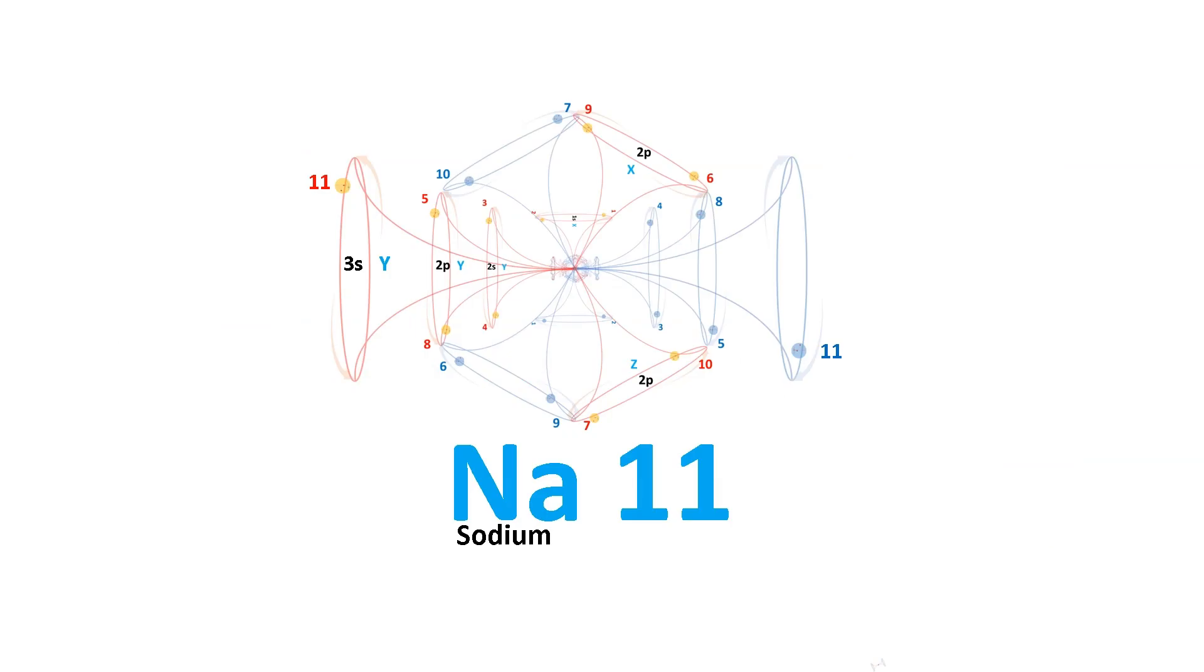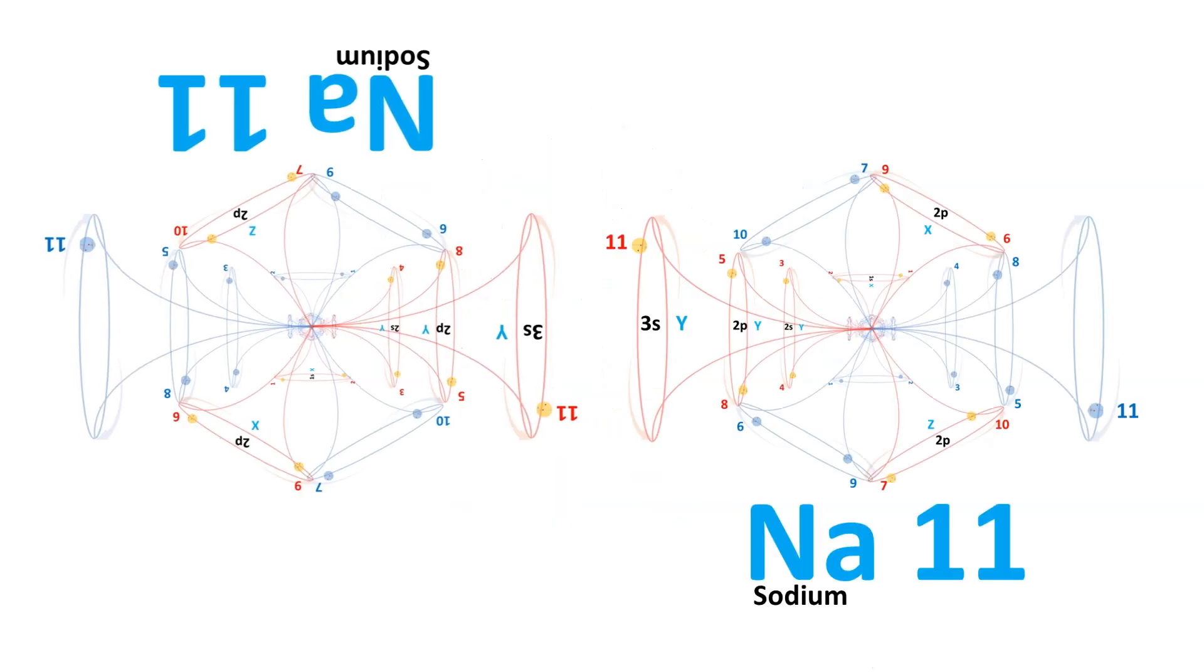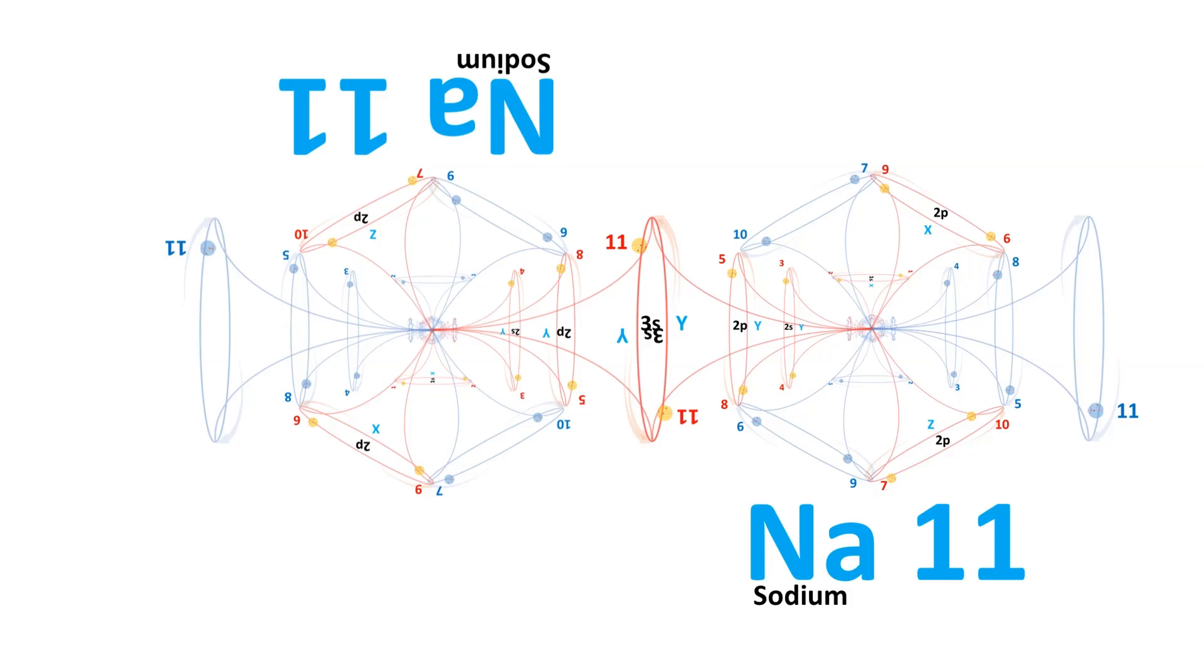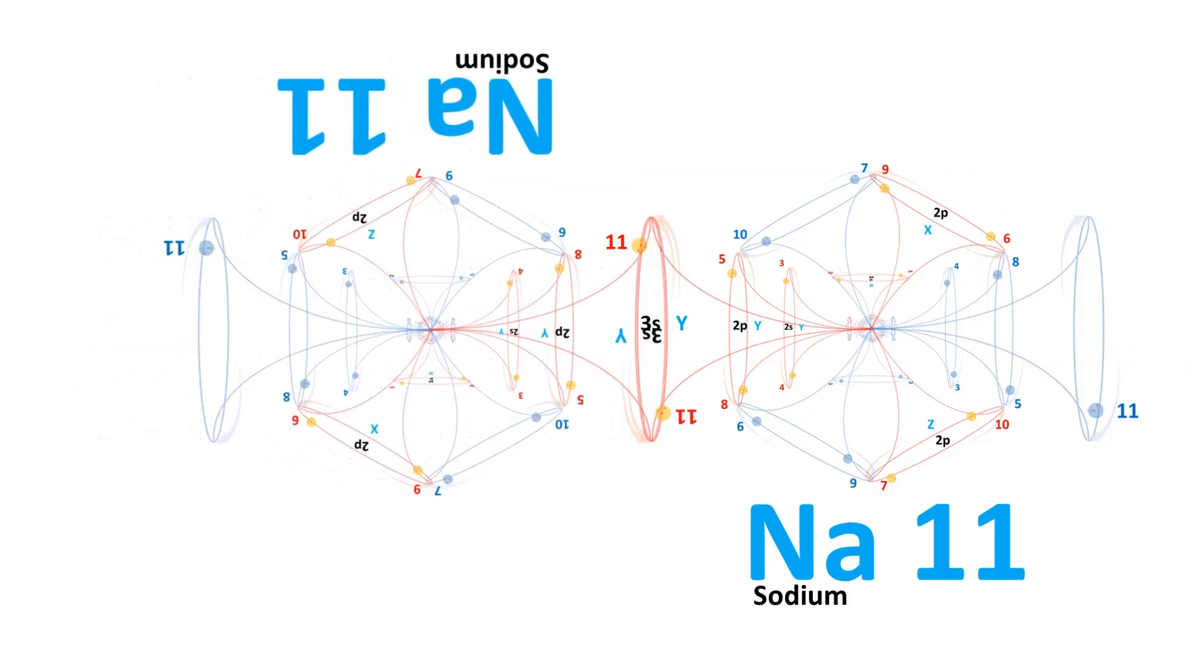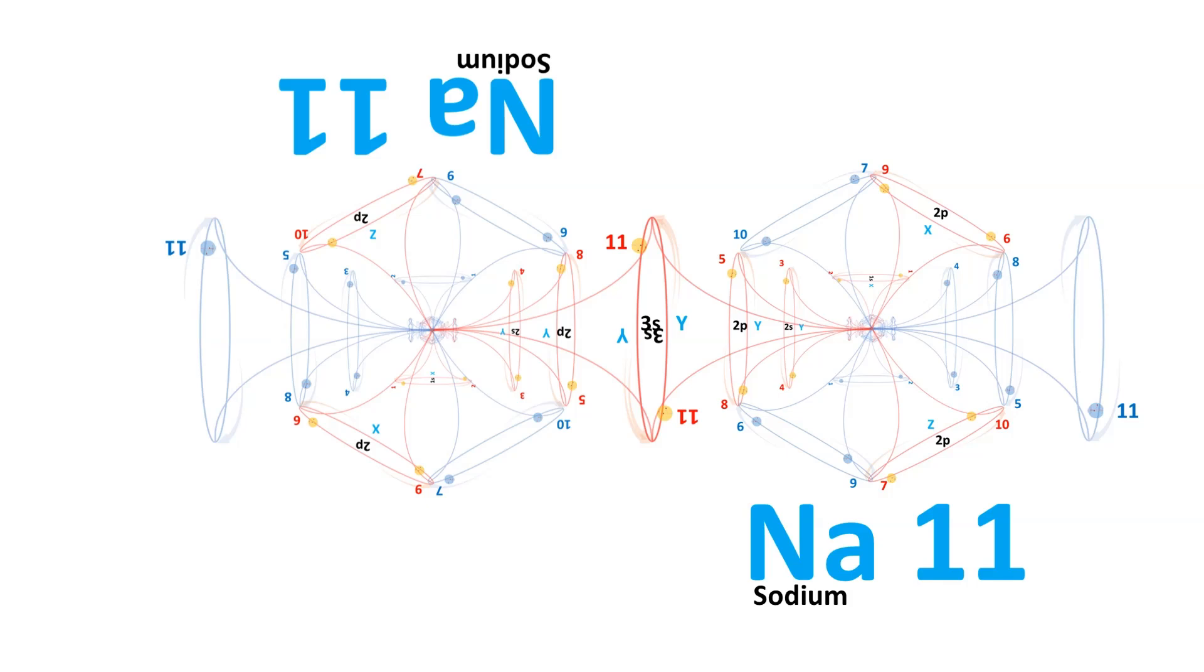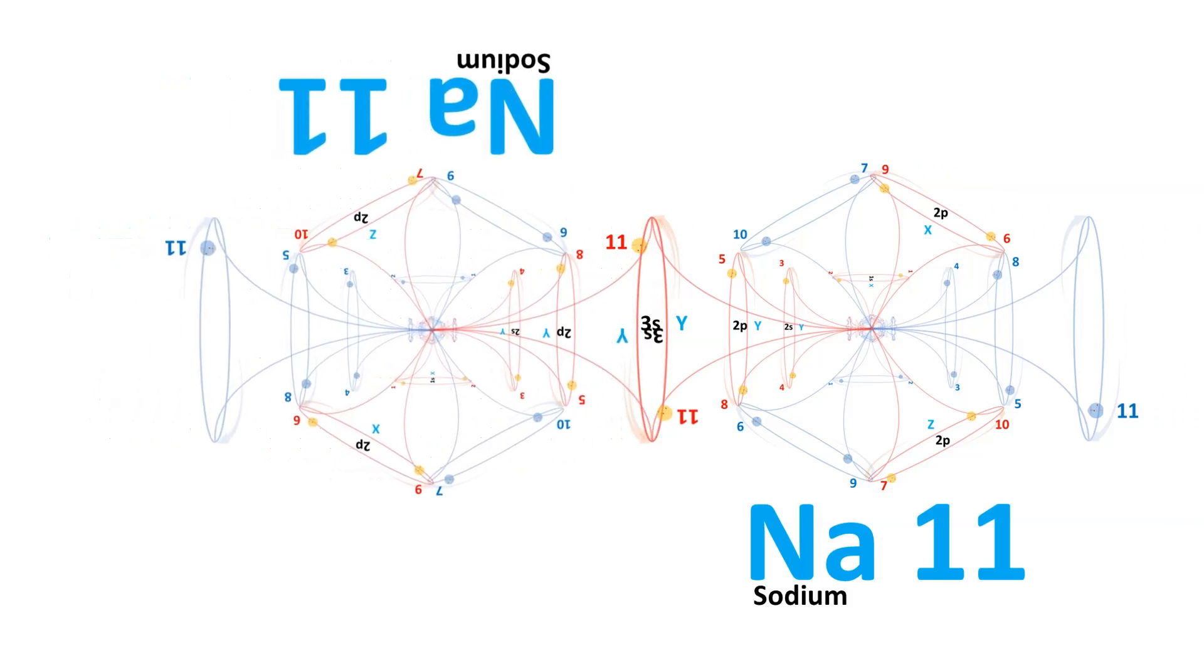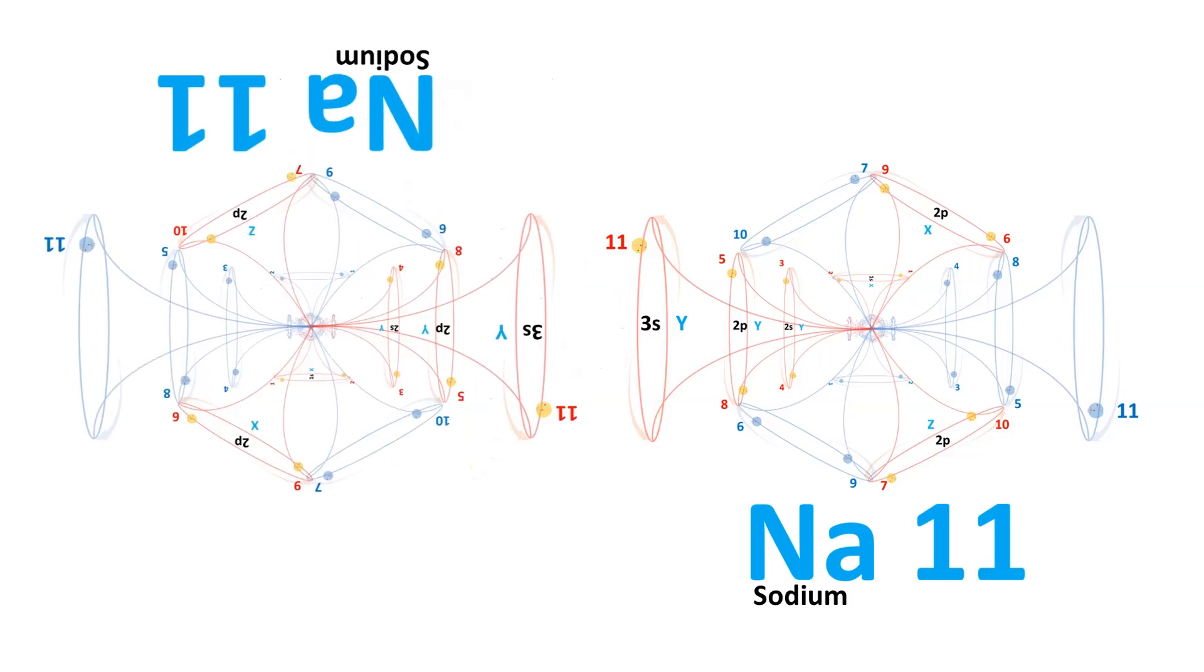The additional electron occupies the highest energy level available, the 3s orbital. This orbital's heightened energy results in electrons being, on average, positioned farther from the nucleus compared to the 1s, 2s, or 2p orbitals that envelop them. This transition manifests as the other orbitals existing within the 3s orbital, thus enabling sodium to initiate electron acquisition within the 3s orbital.